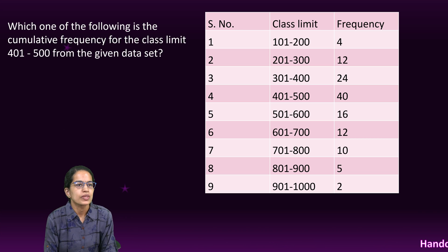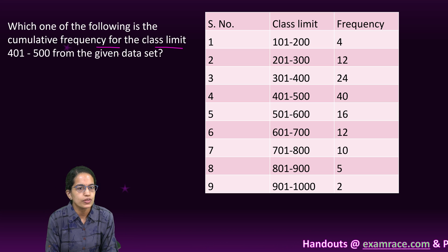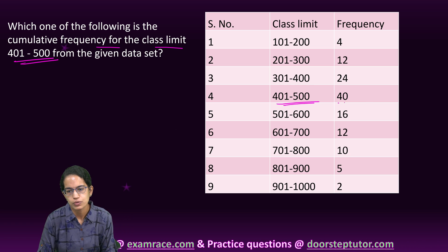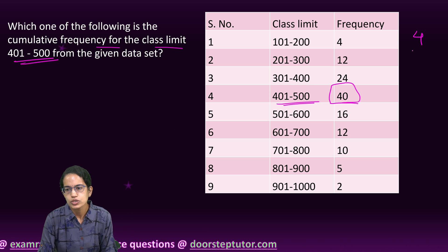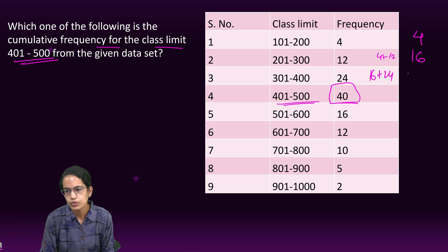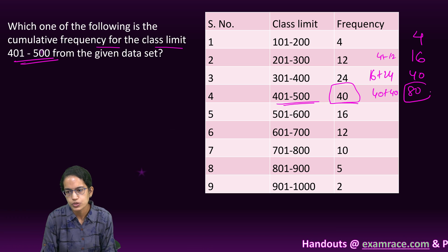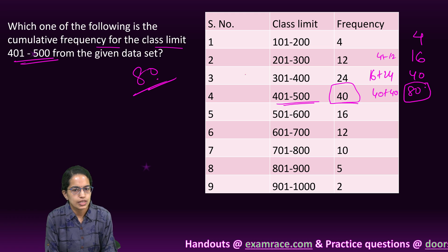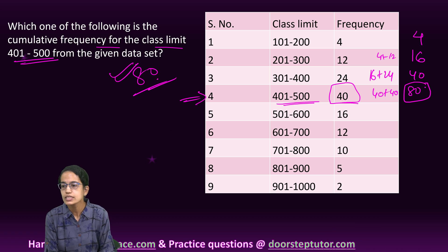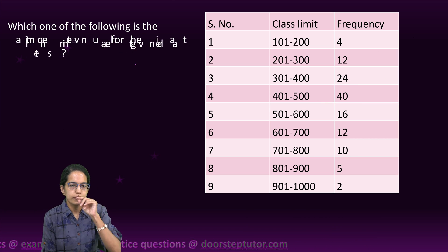The next question based on the same table: which one of the following is the cumulative frequency for the class limit 401 to 500? I calculate up to that class only: 4, then 4+12=16, then 16+24=40, then 40+40=80. So the cumulative frequency up to class limit 401-500 is 80.